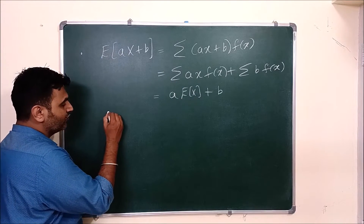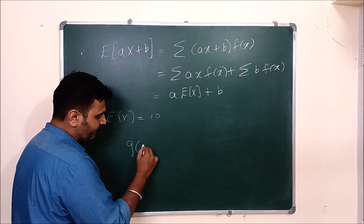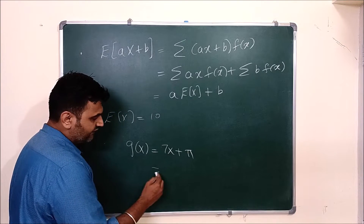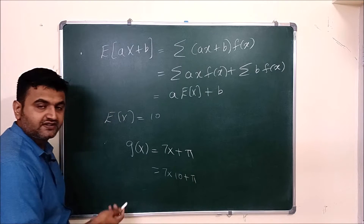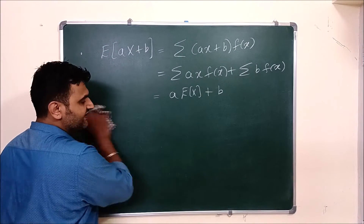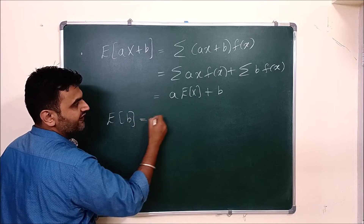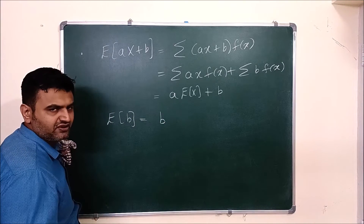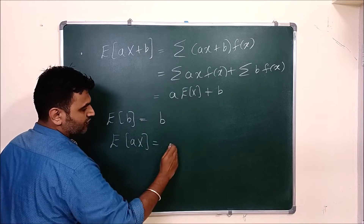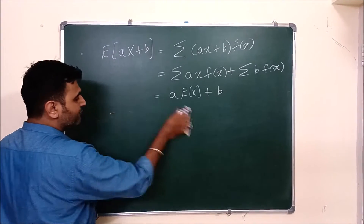For example, if you know E[X] = 10 and someone asks for E[7X+π], no need to be scared — it is simply 7·E[X] + π = 70 + π. In competitive exams, knowing such results always helps. As special cases: if a=0, E[b] = b (the average of a constant is the constant); if b=0, E[aX] = a·E[X] (the scalar comes outside). These are the linearity properties one should know.